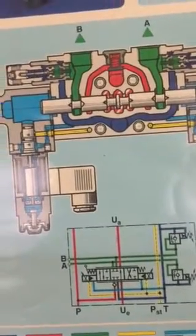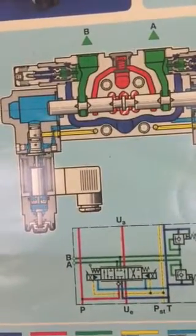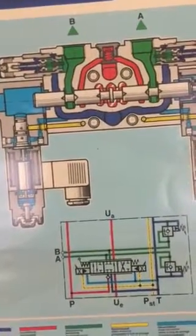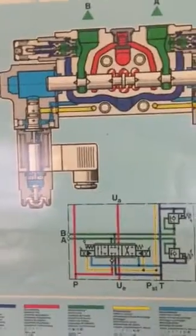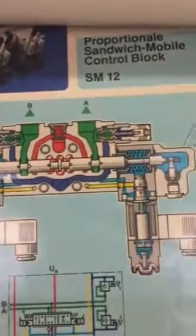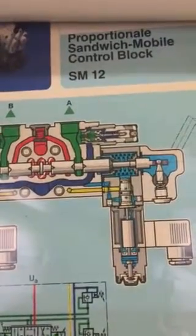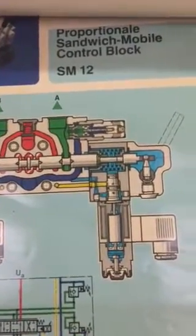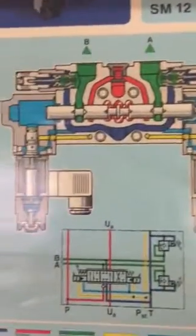Thank you. This is Adnan Sunny. My WhatsApp number is 00923124225402, and my email is adnan_sunny@yahoo.com and adnan@gmail.com. Thank you, and love hydraulics! So my hydraulic lovers, now you have learned about another form of hydraulic valve, which is called the Proportional Sandwich Mobile Control Block.